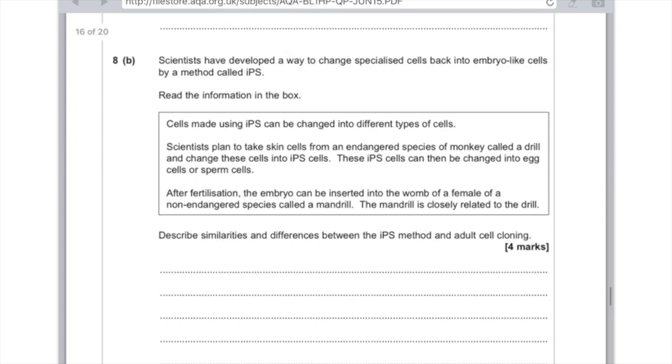Describe similarities and differences between the IPS method and adult cell cloning. What you want to do is divide your answer into two: similarities and differences. Start with what you're most comfortable with, which for me is talking about the similarities between the two methods. Point out really basic things, things which you might think are too basic to get a mark, but you're probably going to be successful.